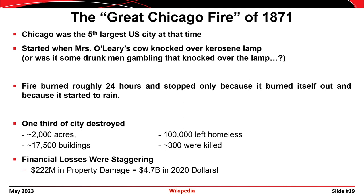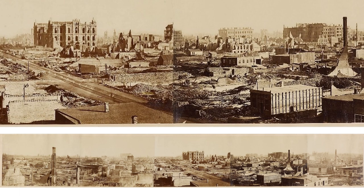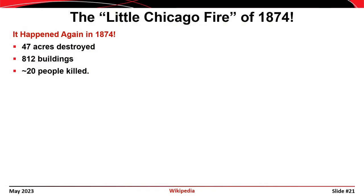One-third of the city was destroyed, including 2,000 acres of property, 17,500 buildings were destroyed, 300 people were killed, and about 100,000 were left homeless. The financial losses were staggering: $222 million in property damages at the time, which corresponds to almost $5 billion in today's money. The pictures on this slide come from the 1800s and show the devastation — most of the buildings were turned to rubble.